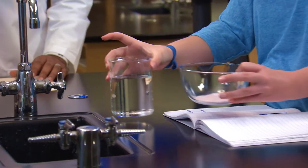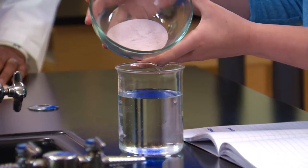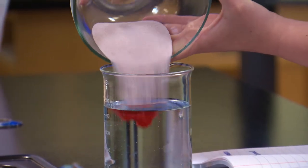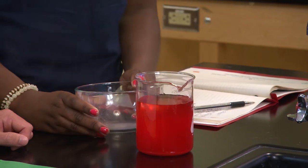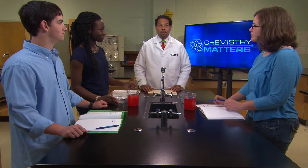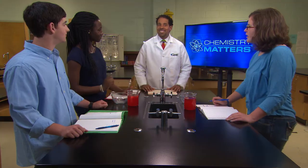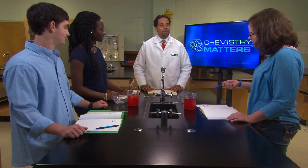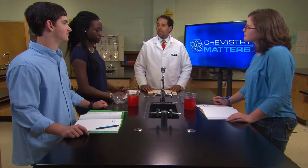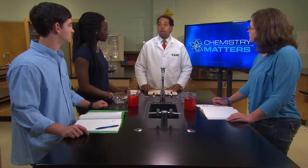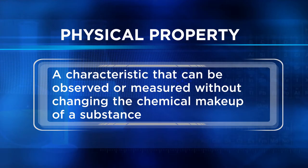Now pour the powder into the water. Have any of the properties changed? Yeah, the water's red now. The texture of the powder isn't the same — I think it dissolved in the water. The powder in the water might have formed a new substance, but it's really hard to tell without more information. We really need to know more about the physical properties of these substances. A physical property is a characteristic that can be observed without changing the chemical makeup of a substance.